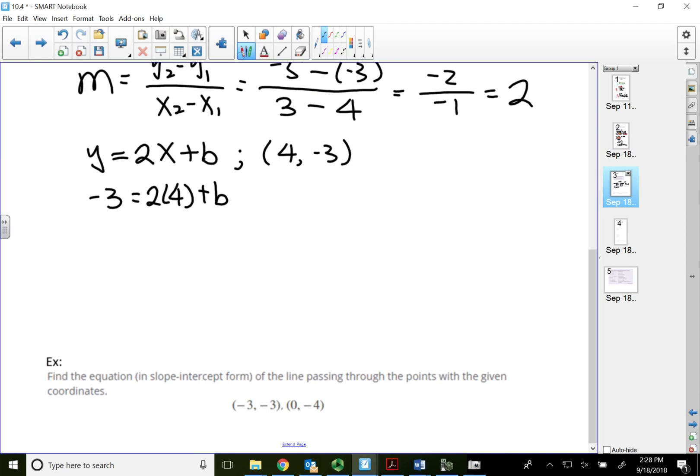Alright, 2 times 4 is 8. So negative 3 equal to 8, positive b. To get b by itself, move the 8 over. Then become negative. So b should be negative 3 minus 8, negative 11. Alright, so once I find my b, I can put it back to what I've already begun to write. So my equation of the line got to say y equals 2x minus 11.